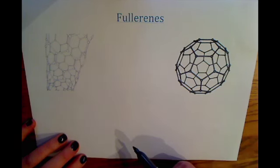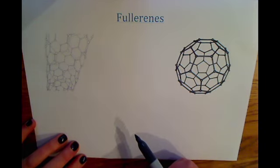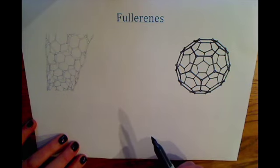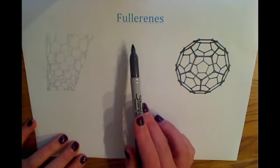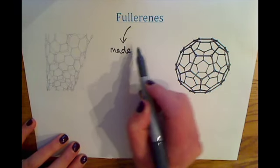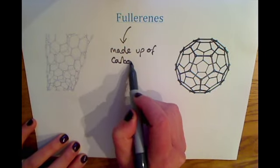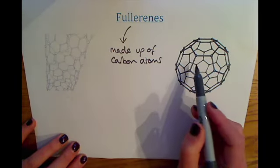This video is about fullerenes, which are structures made of carbon. We've discussed before about diamond and graphite — those giant covalent structures that can be made from carbon. Carbon can also make structures called fullerenes, and they are solely made up of carbon atoms.